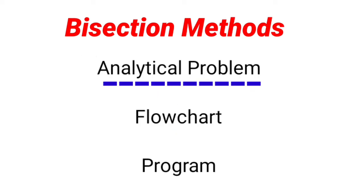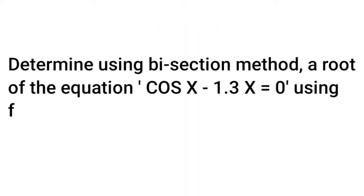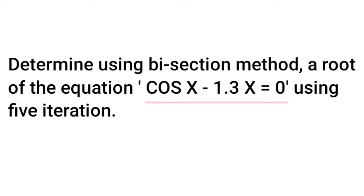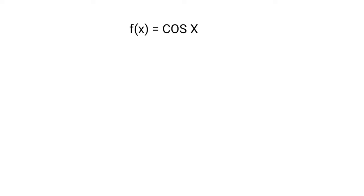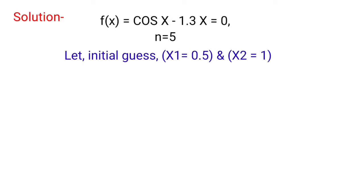First we have to solve an analytical problem and create a flowchart for the process, and at last we have to create the MATLAB program. We will determine, using bisection method, the root of the equation cos(x) minus 1.3x equal to 0 using 5 iterations.